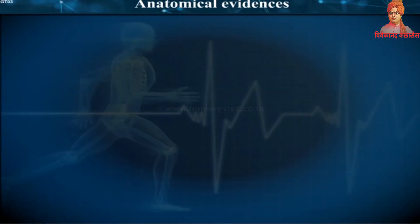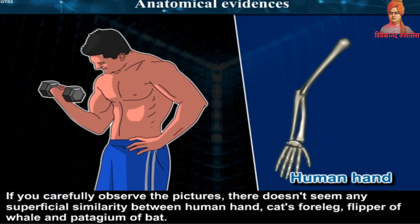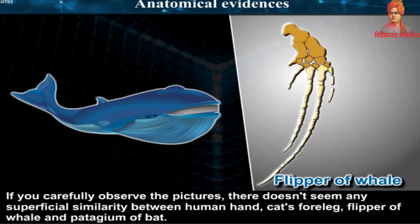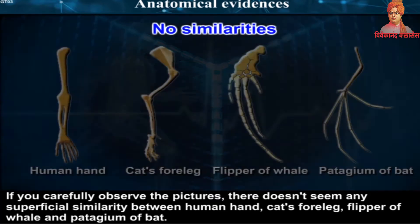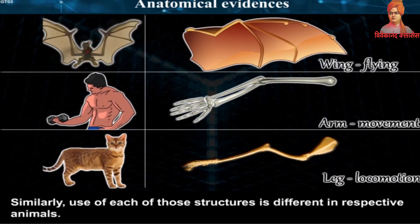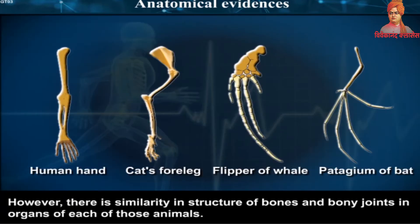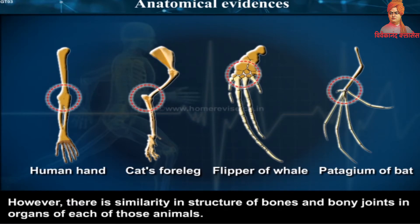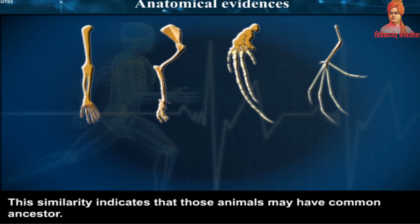Anatomical Evidences. There doesn't seem any superficial similarity between human hand, cat's foreleg, flipper of whale, and patagium of bat, and the use of each of those structures is different in respective animals. However, there is similarity in the structure of bones and bony joints in the organs of each of those animals. This similarity indicates that those animals may have common ancestors.